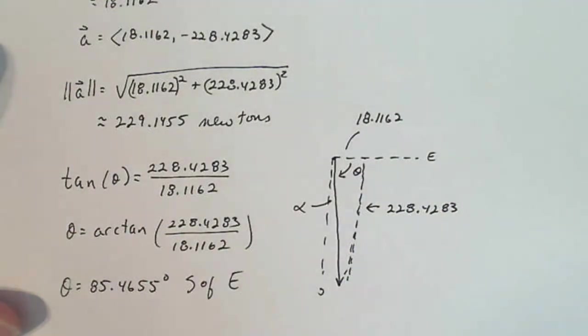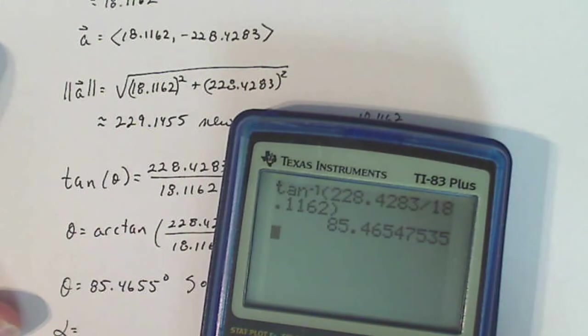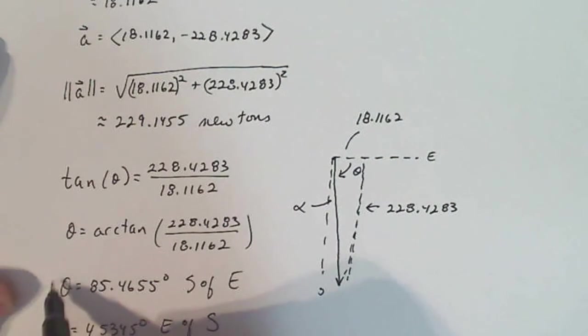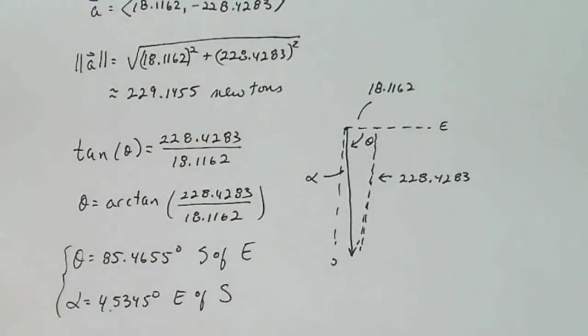If you found alpha, alpha would turn out to be 85.4655 minus 90, so 4.5345 degrees, 4.5345 degrees east of south. So either one of these would be acceptable for this problem because it doesn't say if you're supposed to go from the vertical or horizontal in finding position. So either one of those would be fine.